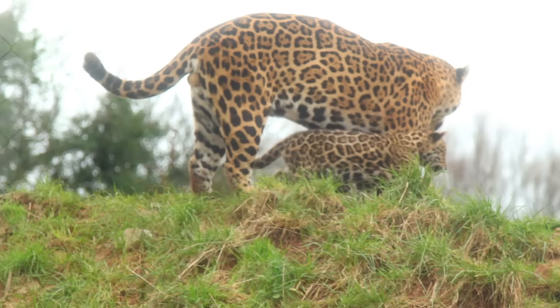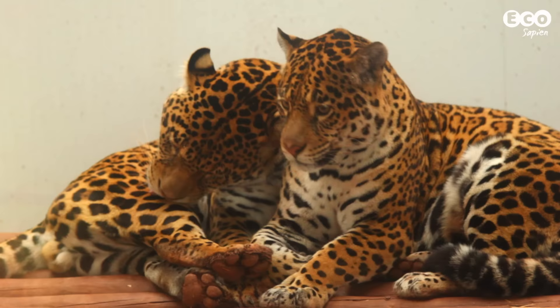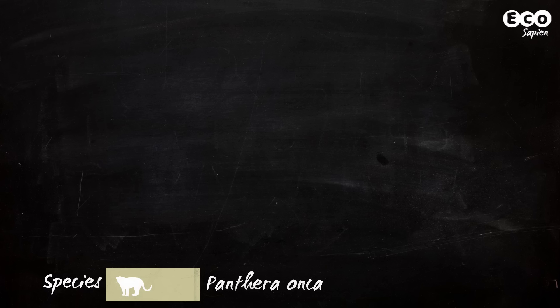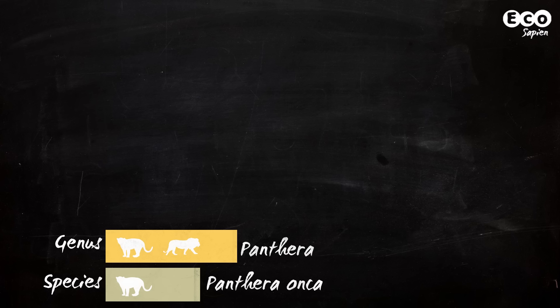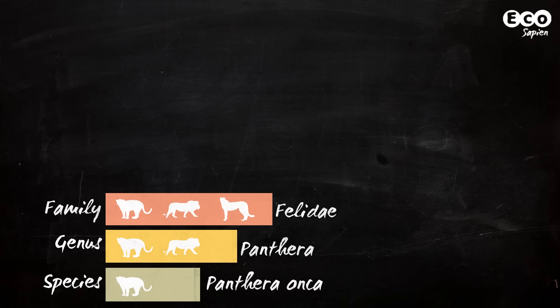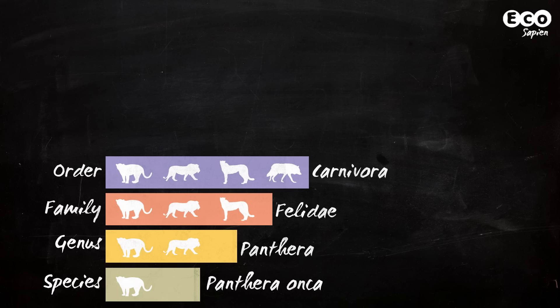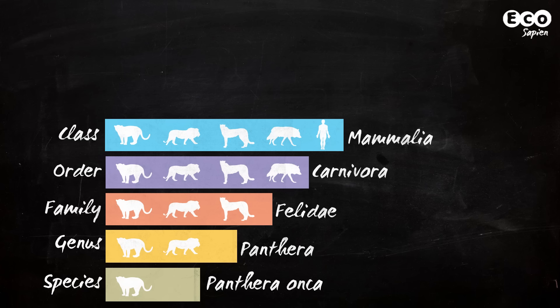Let's look at a more familiar example — a fellow mammal, the jaguar. Its Latin binomial name is Panthera onca. The genus Panthera is shared by other big cats, like the lion, leopard, and tiger. Big cats are part of the cat family, Felidae. And Felidae is part of the order Carnivora, which includes creatures like dogs, seals, and bears.